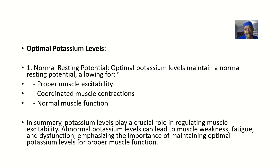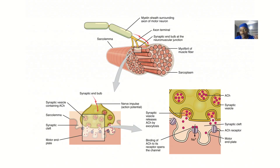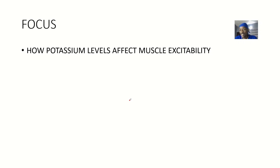If potassium levels are within the normal range — optimum potassium levels — this leads to a normal resting potential. Optimum potassium levels maintain a normal resting potential, allowing for proper muscle excitability, coordinated muscle contraction, and normal muscle function. Maintaining potassium levels within the normal range is critically important in the body.